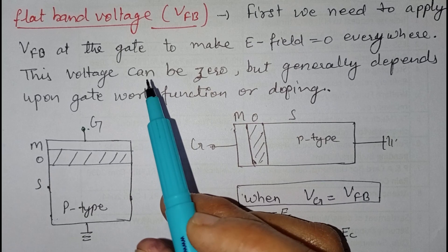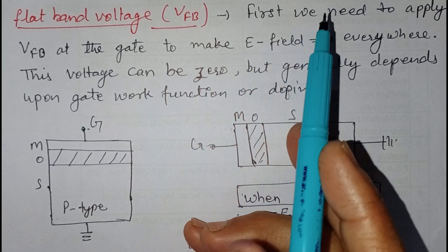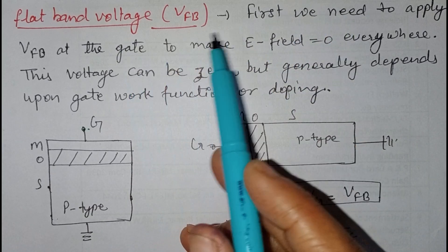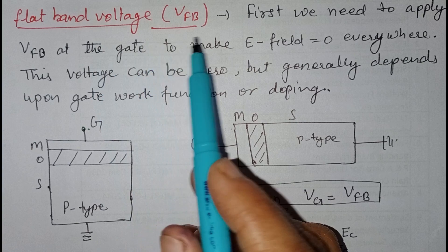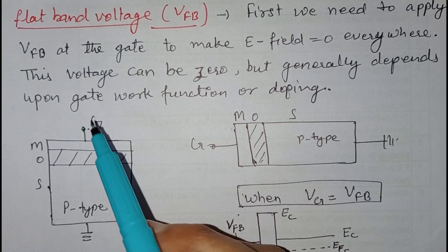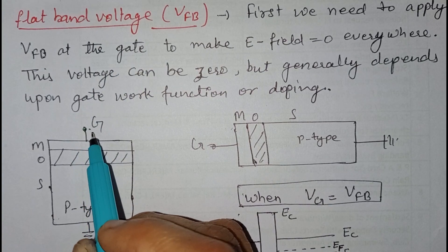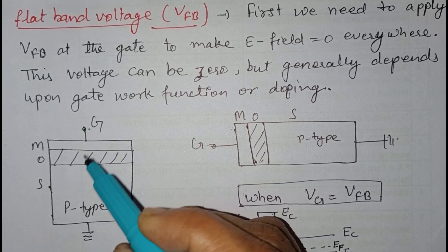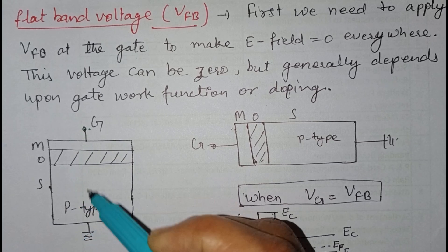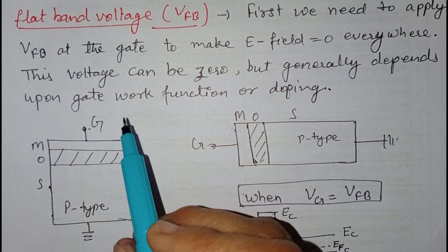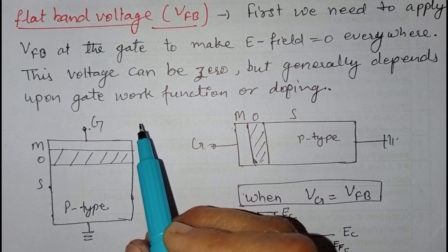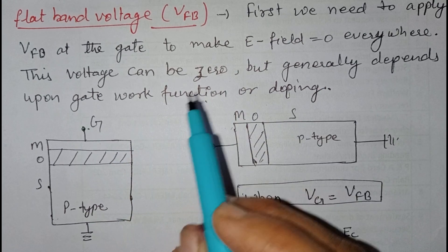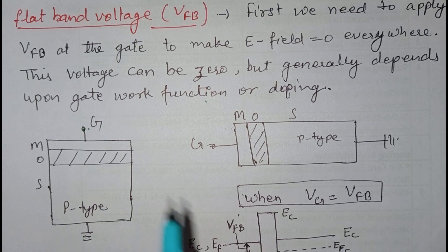Before we extend our discussion to the three modes of operation of the MOS capacitor, we should know about flat band voltage. We need to apply flat band voltage at the gate to make the electric field everywhere in the MOSFET zero. This voltage can be zero, but generally it depends upon the work function or the doping concentration of the substrate.